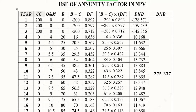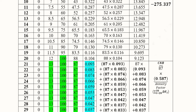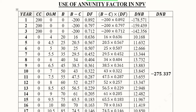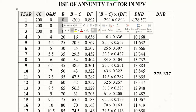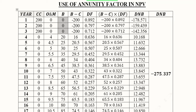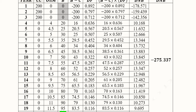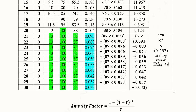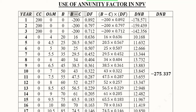From the fourth year the operation and maintenance cost starts as the project has begun to function, and it continues till the end. The benefits column shows no benefits for the first three years because there is no working of the project. Benefits start from the fourth year when the project starts operation and continue till the end. The net benefit column (B minus C) is simply the difference of benefits and costs.